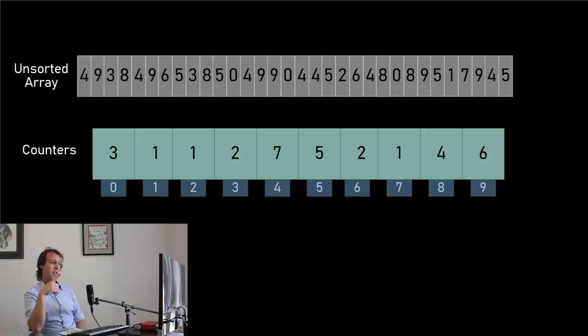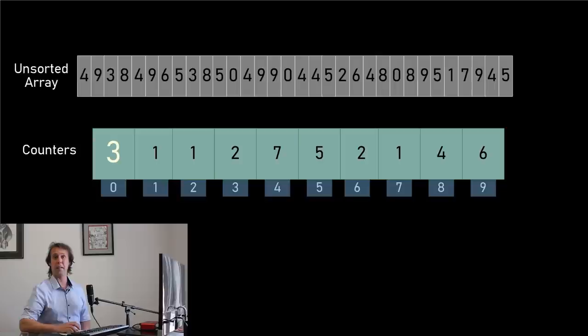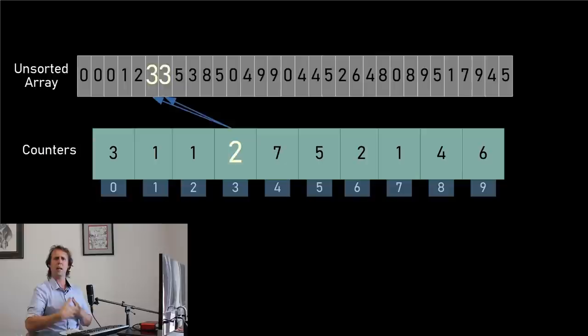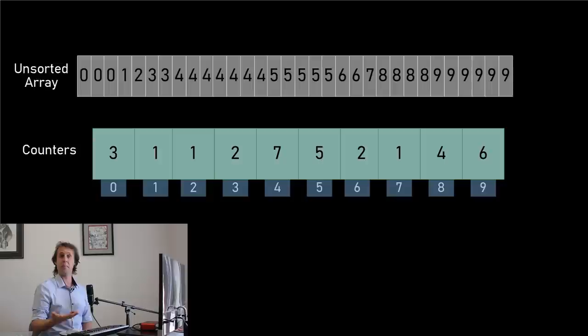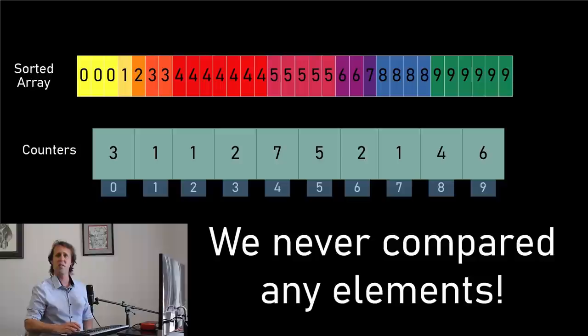From these little counts, we could fairly easily rebuild the sorted array. The number of zero elements in the original array was three, so when we rebuild we write three zeros at the start. There was one one-digit, so we write one one. There was also one two-digit. We rebuild our array based on the counts all the way from three zeros at the start up to the six nines. We've produced the sorted array — we've sorted the original list of numbers. But we didn't use any comparisons at all. We never asked 'is element two greater than or less than element 50?' The algorithm we just used is called counting sort. Pretty simple stuff, really.